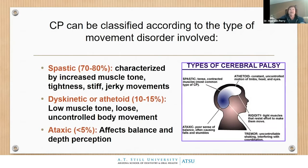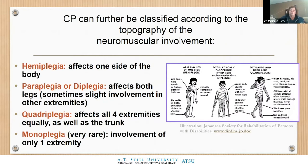CP is classified according to the kind of movement disorder involved. Spastic CP involves jerky movements with very high muscle tone. Dyskinetic or athetoid CP involves low muscle tone with slow, uncontrolled writhing movements. Ataxic CP is the rarest kind, affecting balance and perception. Patients can also have a mixed type. We also classify by hemiplegia, diplegia, paraplegia, quadriplegia, or monoplegia. We mostly see hemiplegia and paraplegia.